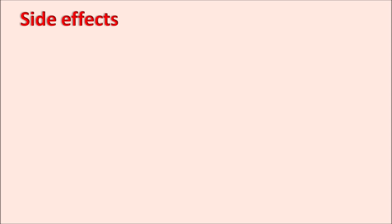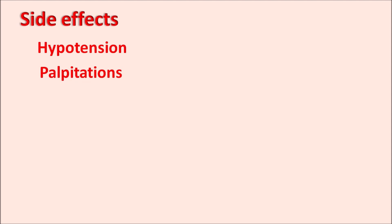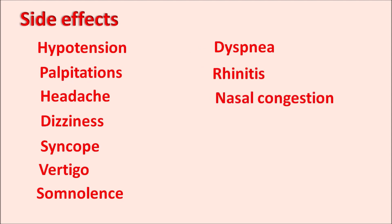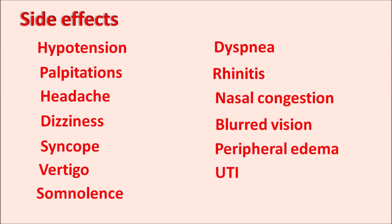The side effects of Terazosin are related to its vasodilatory effects. This drug can produce hypotension and palpitations — because of hypotension, sympathetic activity increases causing palpitations. It can also produce headache, dizziness, syncope, vertigo, somnolence, and sleepiness. Additionally, it can cause dyspnea and upper respiratory tract infections resulting in rhinitis and nasal congestion, as the nasal blood vessels relax causing accumulation of nasal fluids. Other side effects include blurred vision, peripheral edema, urinary tract infections, and priapism — a painful erection.